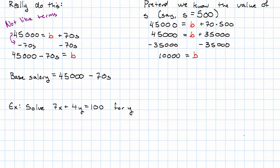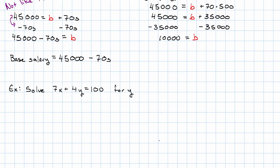Well, we're pretending we know what X represents, and we want to get Y by itself. Our first move is going to subtract 7X from both sides. We'll just be left with 4Y is 100 minus 7X.